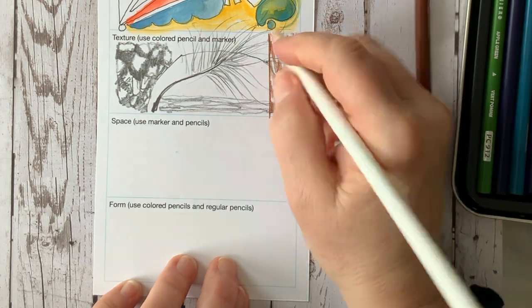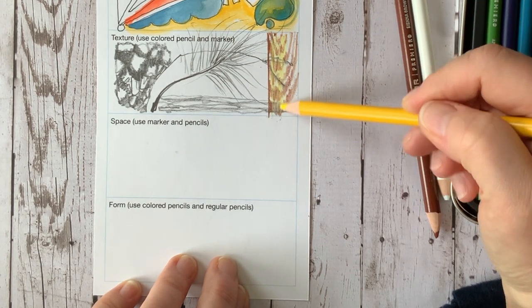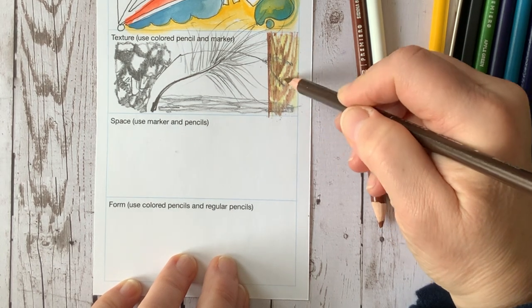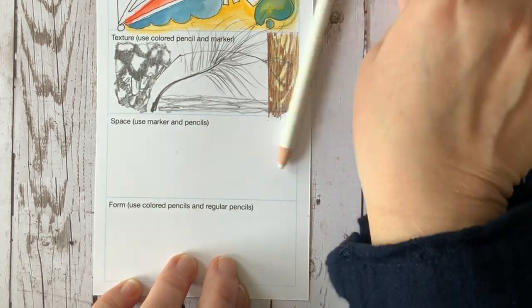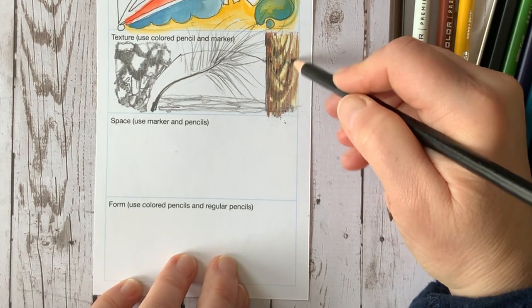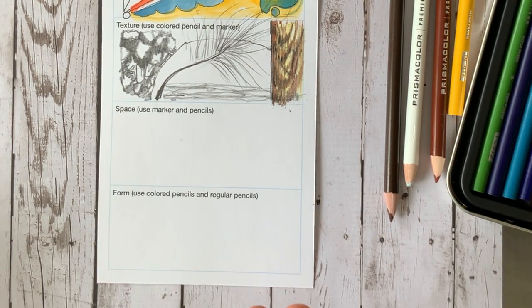And you can also use colored pencils to make the same sort of texture. In this case, this is a wooden texture. It's just fun to play. Try a bunch of different things. You can do a brown bag, and that's a crinkly texture.